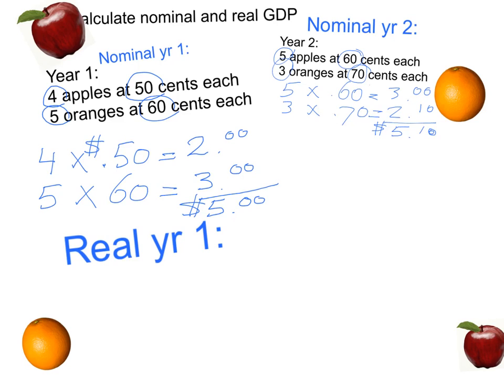Well, if we're going to use year one prices, it means that real GDP in year one is the same as nominal GDP was in year one. So it's very easy. Real GDP in year one, simply also $5.